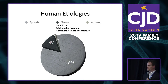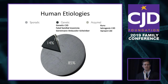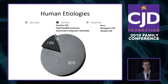The forms we hear the most about are thankfully the least common — under 1% — and those are the acquired or infectious forms: Kuru, iatrogenic CJD, and variant CJD. We'll go over all of these in detail.